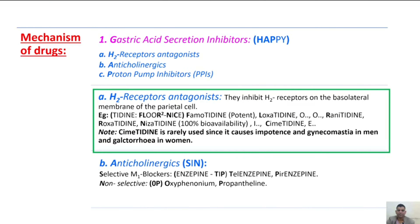Let us discuss H2 receptor antagonists. They inhibit H2 receptors located on the basolateral membrane of the parietal cell. They end with the suffix -tidine. The mnemonic is FLRRNC — bold letters F, L, R, R, N, C: F for famotidine, L for loxatidine, R for ranitidine, one more R for roxatidine, N for nizatidine, C for cimetidine.